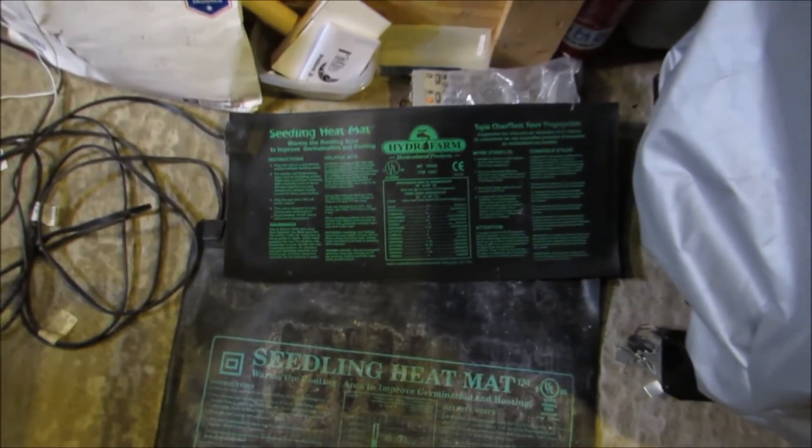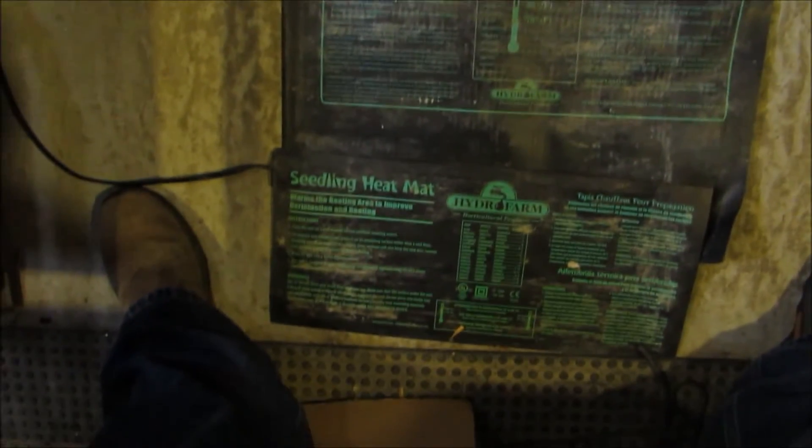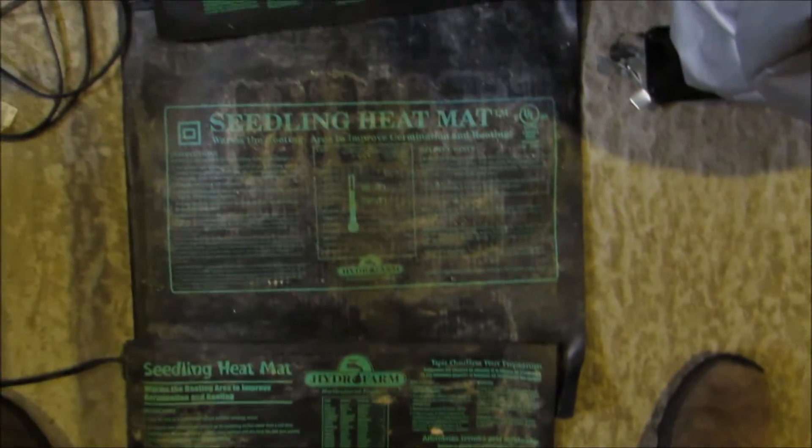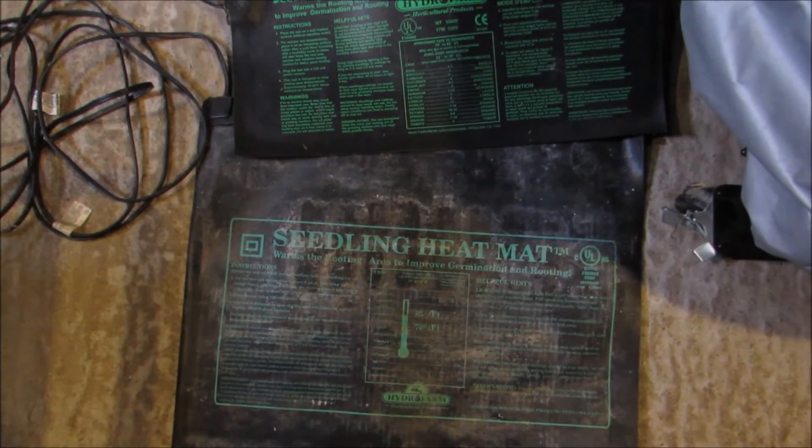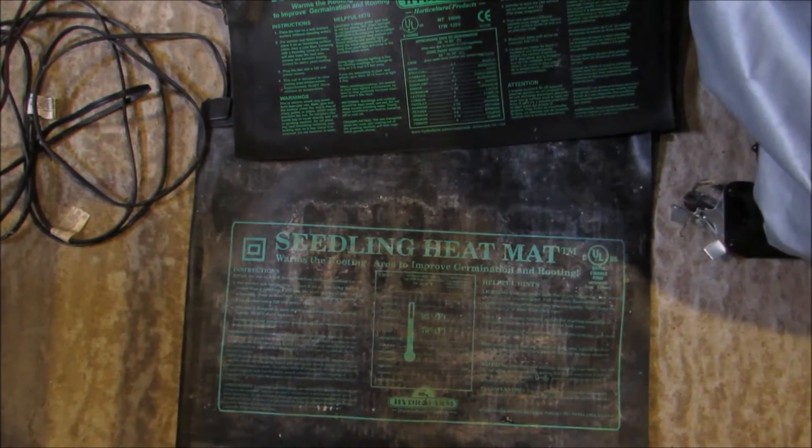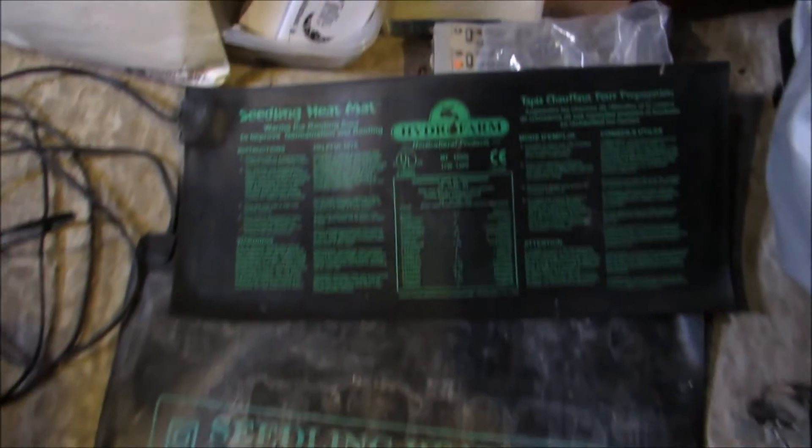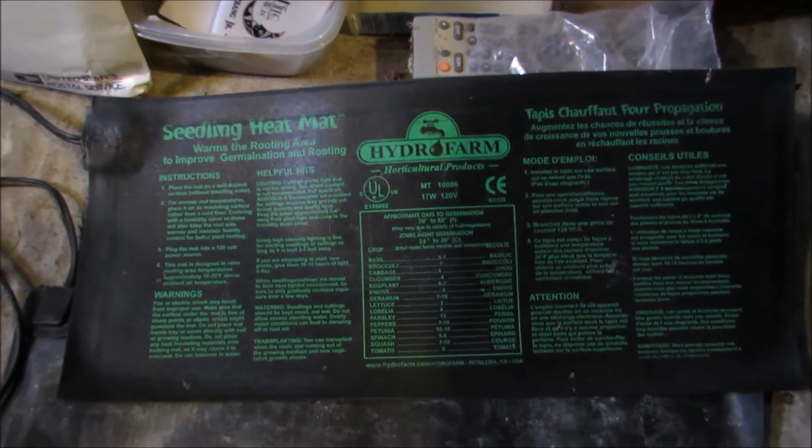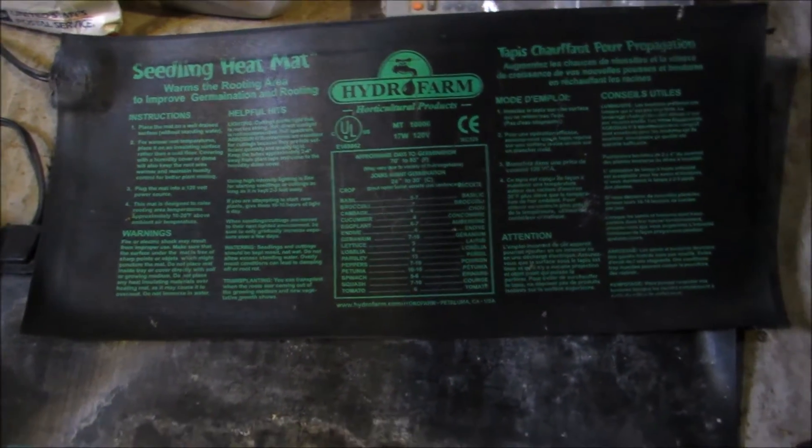I have these seeding heat mats. They're rubber with a coil inside, sort of like an electric blanket. It's a propagation mat that helps your seeds grow and keeps them heated.